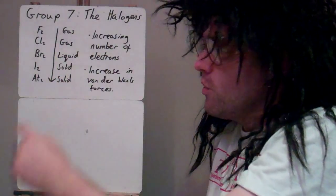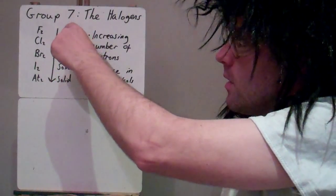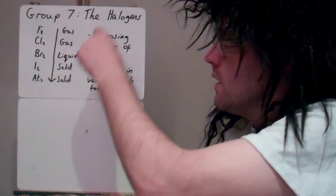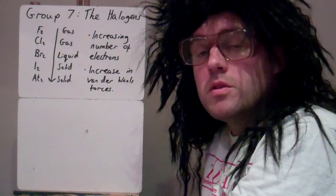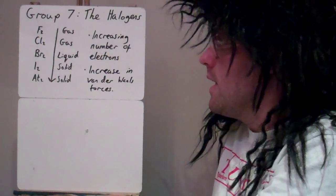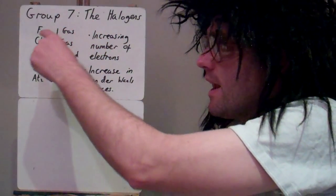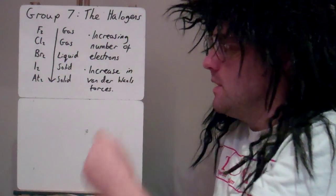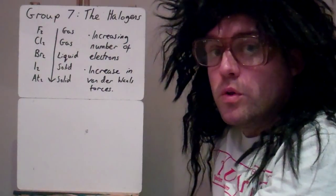As you can see, as you go down group 7, going from gases, liquids, solid, solid, the boiling points and melting points are increasing. The reason for that is because we've got an increasing number of electrons in each one, and this leads to an increase in the van der Waals forces between the molecules.